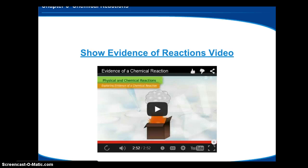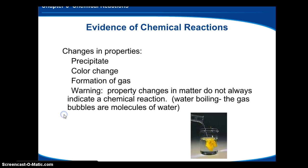That is a quick video on the evidence in chemical reactions. So evidence, like we said, are precipitates, color change, formation of a gas. Those are some examples. Property changes in matter don't always indicate a chemical change. Like water boiling, the gas bubbles are molecules of still water. There's still H2O, even though it changes state of matter.